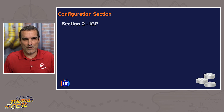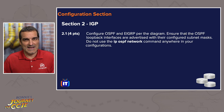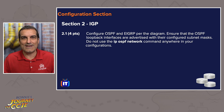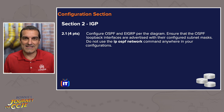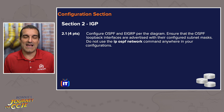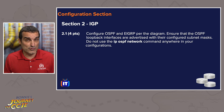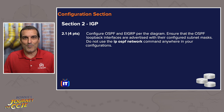Moving to section two, the interior gateway protocol section: task 2.1 is a four-pointer to configure OSPF and EIGRP per the diagram — core, core, core task, we have to do it. There is a non-core component here: advertising the OSPF loopbacks with their configured mask without using 'ip ospf network' in the configuration. We wouldn't get those four points if we skip it, which would be tragic, but at least we did the OSPF and EIGRP — the core part.